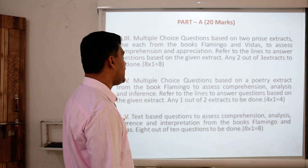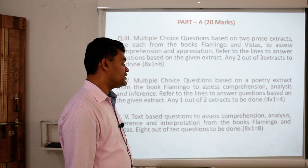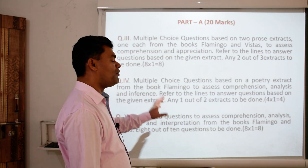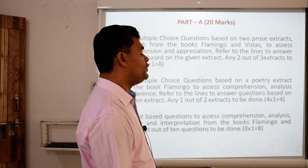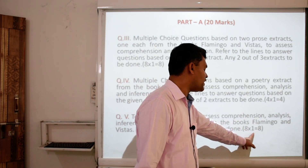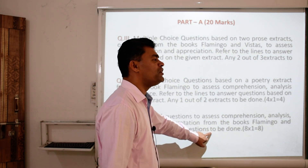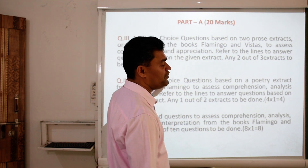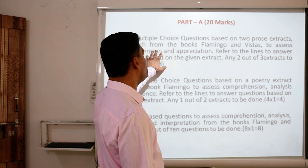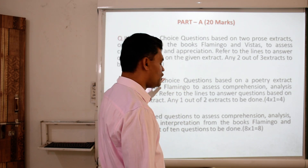For question number 5 in Part A of literature, you will be given 10 questions in the form of choosing the most correct one, out of which you have to answer 8 questions, each carrying 1 mark. So we have 8 plus 4 plus 8, which amounts to 20 marks for literature in Part A. It is completely objective — not descriptive.